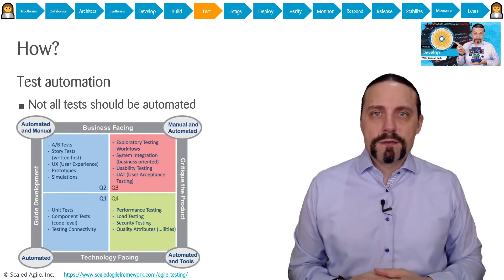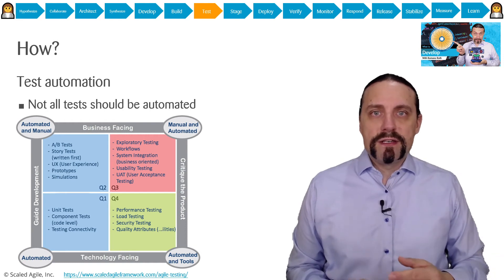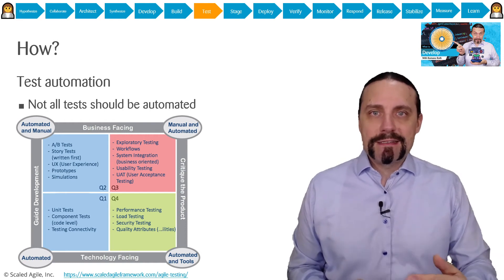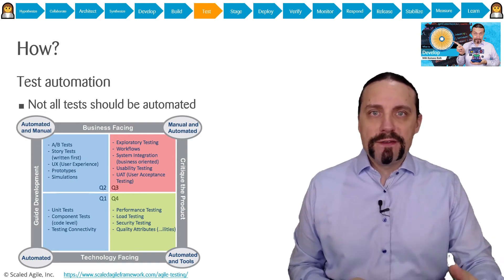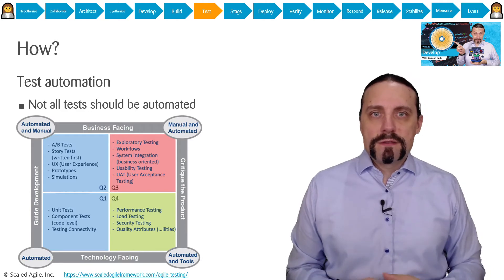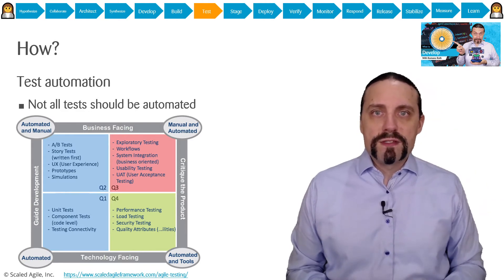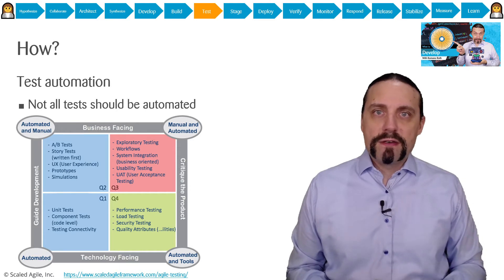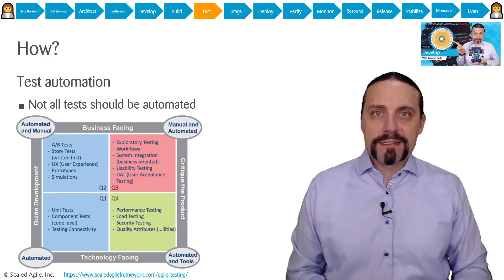This area is also called the user acceptance test because here we execute the acceptance tests which have been defined in the features and user stories. We use behavior driven development to do that so that we have a good set of acceptance criteria.